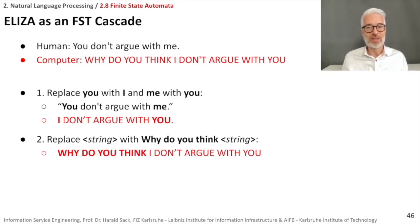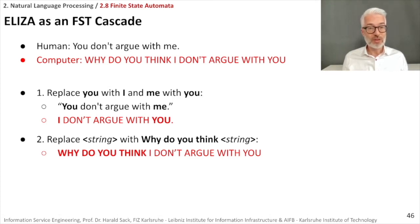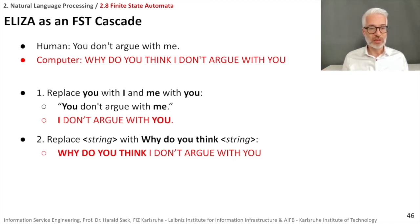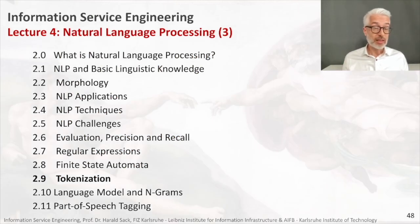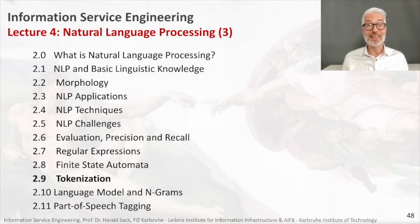Finite state transducers, together with finite state automata, are a first and important technique in natural language processing — a basic technique applied for a long time, with morphological parsing as one key application area. In the next section of the lecture we will cover another technique: tokenization, which means disassembling a sentence into single tokens.